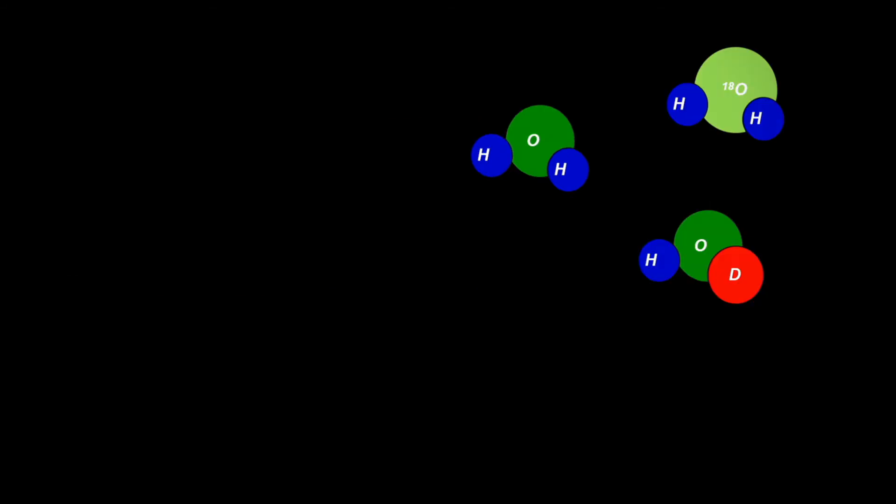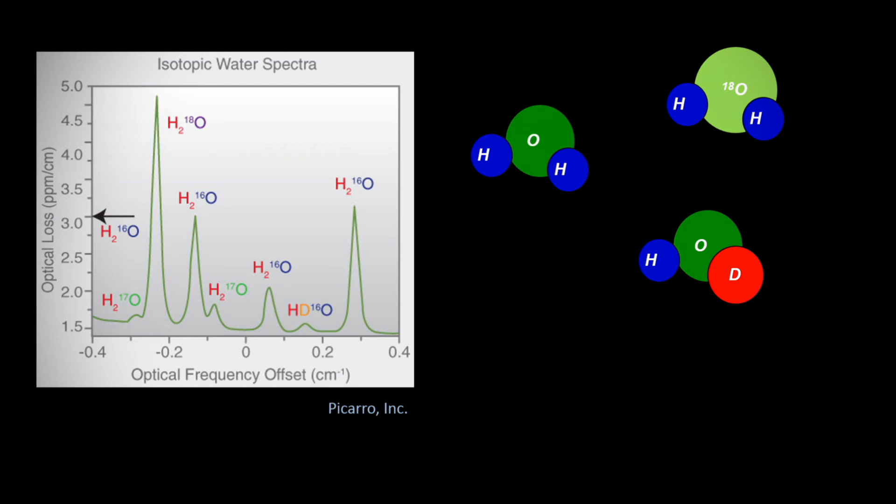So instruments can be designed to do this and lasers are often used to tune the frequency of light so that there's absorption at different points along the spectrum. In one example we see here that there's a relatively narrow range of the wavelength space where many of the isotopes, the stable isotopologues of water can be observed by looking at the absorption features.